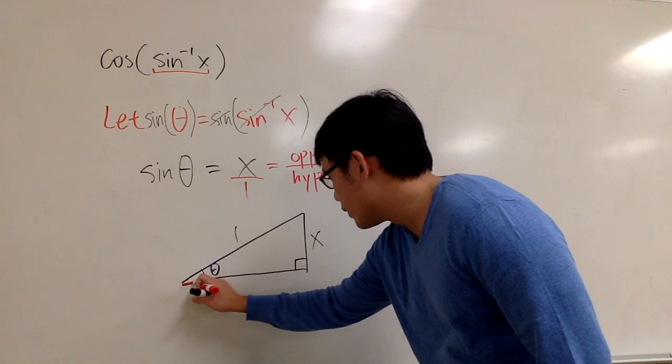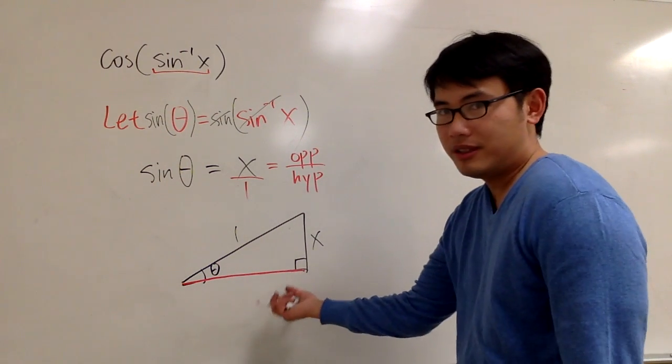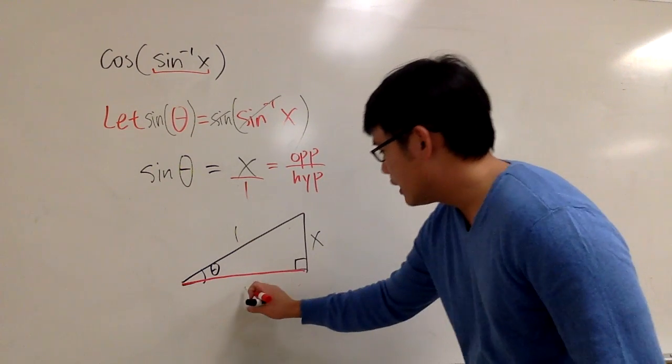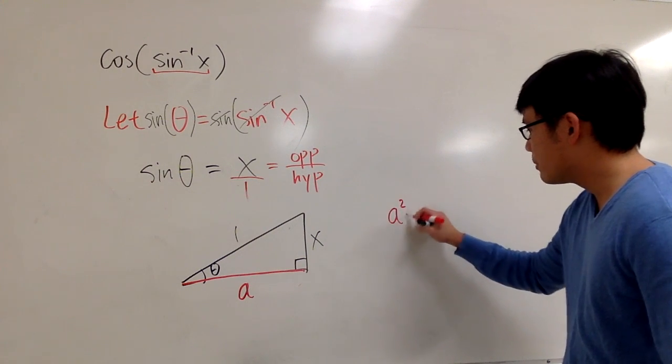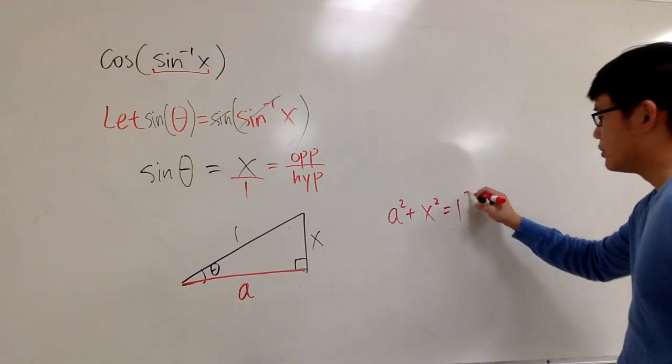And I just need to figure out what's the third side that I don't know. I can do this pretty easily, right? Because I can use the Pythagorean theorem. We have two sides already. I'll call this a. So we know that a squared plus x squared will give me 1 squared.